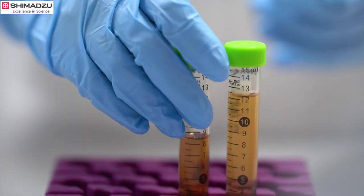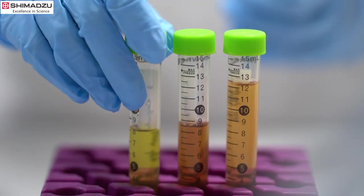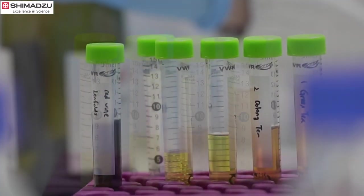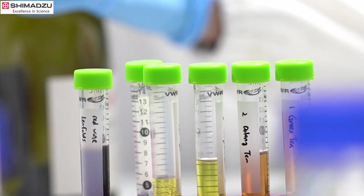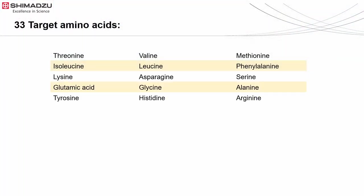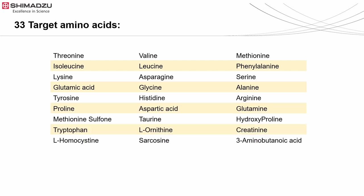Several beverages were used for this analysis. They are green tea, oolong tea, chrysanthemum tea, energy drink, and two red wines. The beverages were analyzed for 33 targeted amino acids, as listed here, including 9 essential amino acids. These free amino acids are detected using LC-MS/MS without any derivatization.